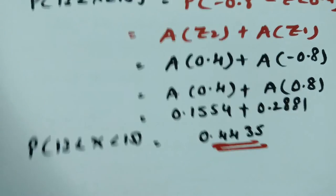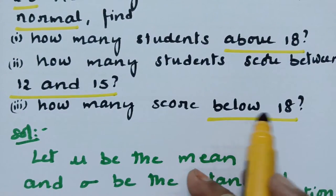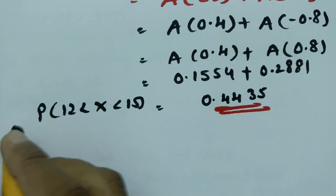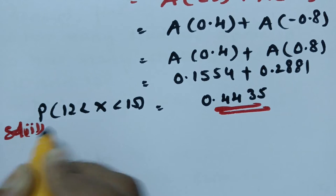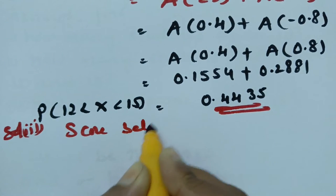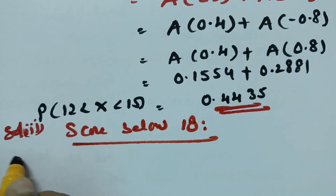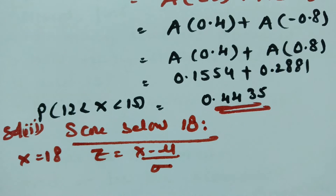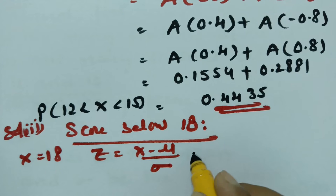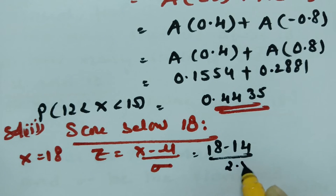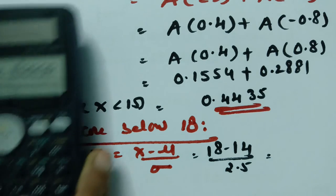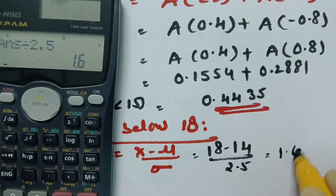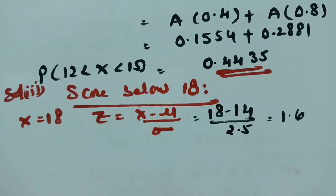For the third question — how many students scored below 18 — we again use x = 18. Applying z = (x - mu) / sigma: z = (18 - 14) / 2.5 = 1.6. So the z-value is 1.6.